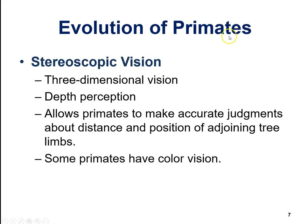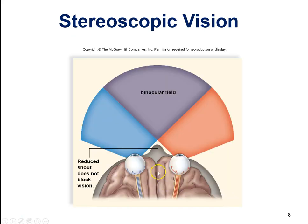These are all general primate traits. Stereoscopic vision provides 3D vision and depth perception — essential if you're jumping from one tree branch to another. Some primates even have color vision, which is more elaborate than in other animal groups. Along with this, the flattened face and reduced snout help with peripheral vision as well.